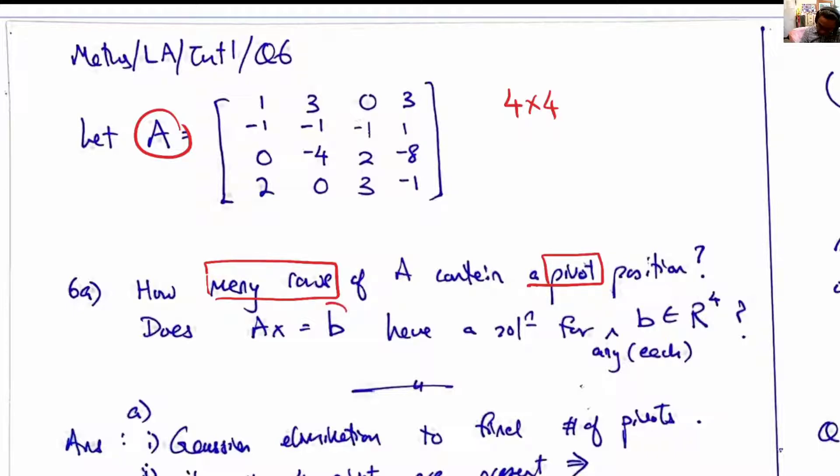We are then asked: is there any solution of B in A? That means, can we always find x that solves for any B? Such a question is asking you to see if A has, in this example, four independent columns.